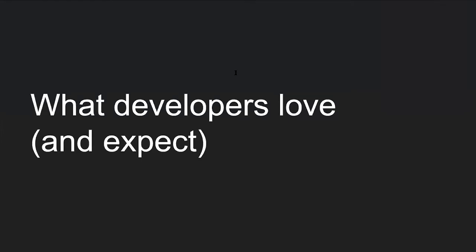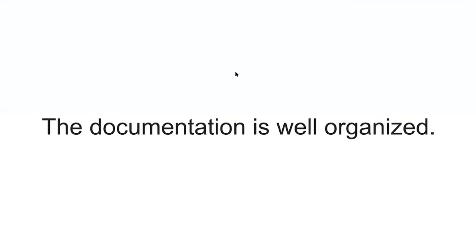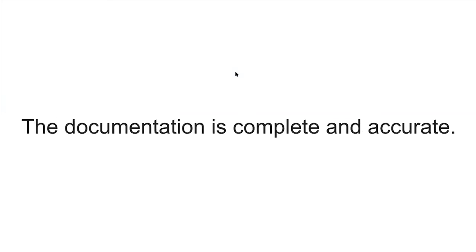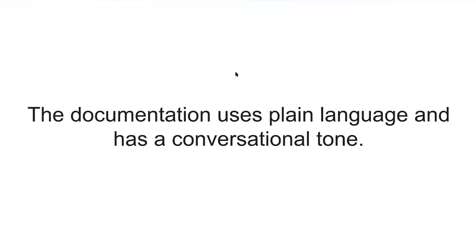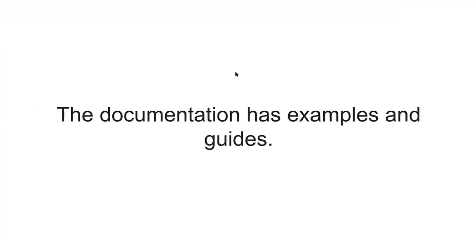What do developers love and come to expect from good API documentation? Documentation that is well organized — you consider the flow of information and are thoughtful about where you place it. The documentation is complete and accurate. It uses plain language and has a conversational tone. The reader is potentially new to the domain, coming in at the entry level. You want to speak to them as someone you're leading on a journey into the problem space. Good documentation also has examples and guides.